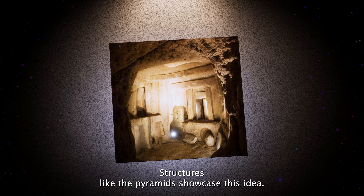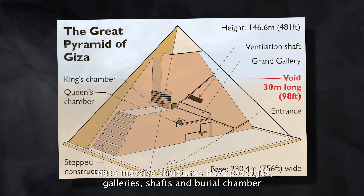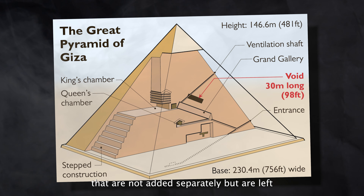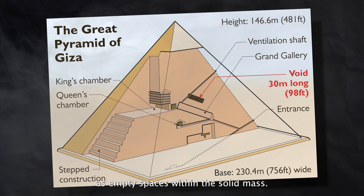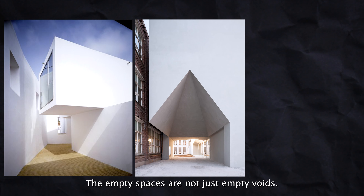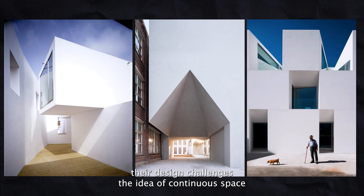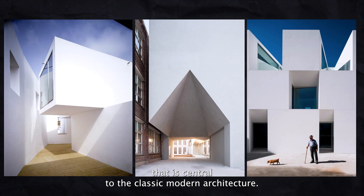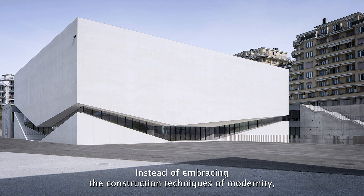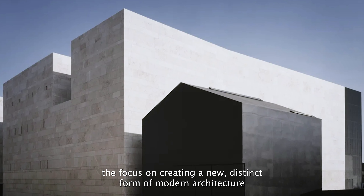Structures like the pyramid showcase this idea. These massive structures have passages, galleries, shafts, and burial chambers that are not added separately but are left as empty spaces within the solid mass. In the work of Ares Mathios, the empty spaces are not just empty voids — they suggest something deeper, like a sense of loss. Their design challenges the idea of continuous space that is central to classic modern architecture, exploring a different approach that focuses on creating a new, distinct form of modern architecture.